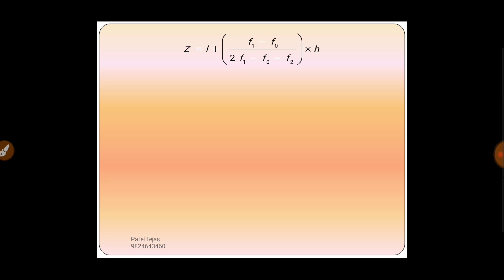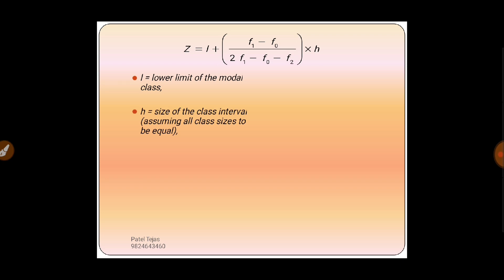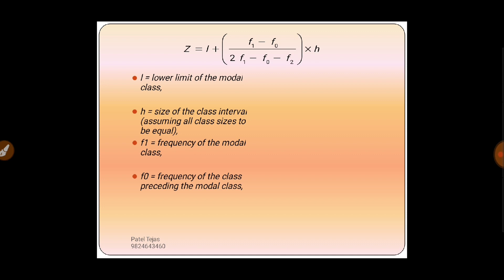Now, what is l? l is the lower limit of the modal class. h is the class length, i.e., the class interval size. f1 is the frequency of the modal class. f2 is the frequency of the class succeeding the modal class — meaning the frequency just below it.